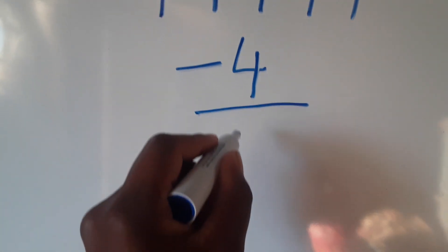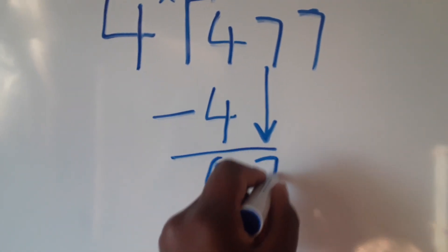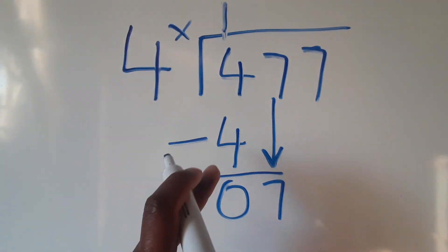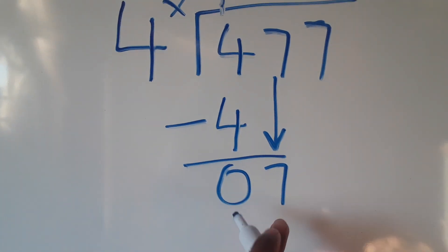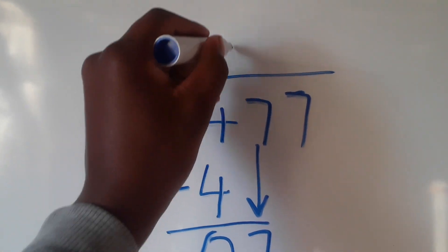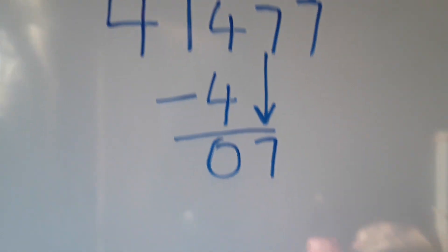We drop the 7. Every time after subtracting, we drop. How many times does 4 go into 7? It's 1 again, we'll put 1. So it's going to be 1 times 4, which is going to